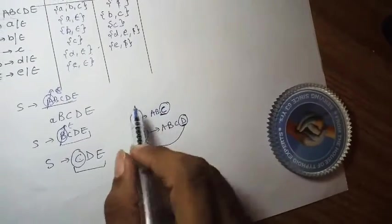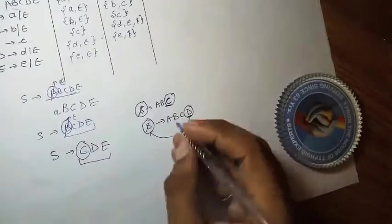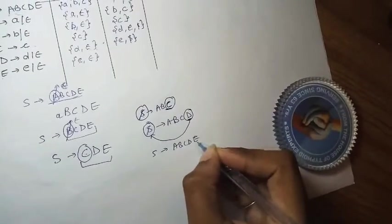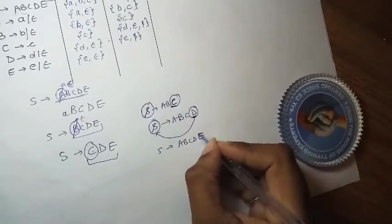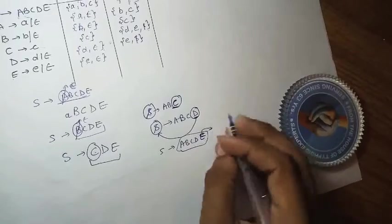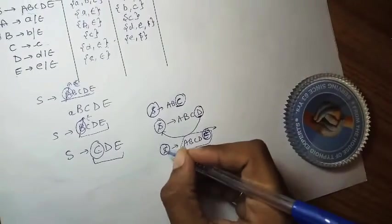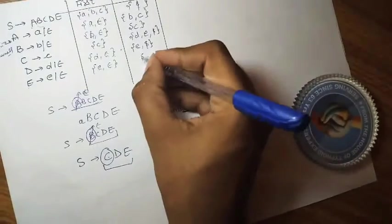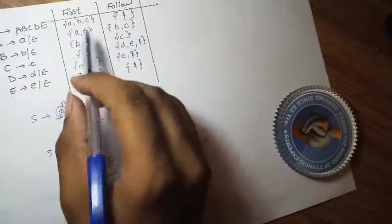For FOLLOW(E), E is at the end of the string A B C D E in the production for S. Since E is already at the terminal position, by the same rule, FOLLOW(E) inherits FOLLOW(S) = {$}. Therefore FOLLOW(E) = {$}. That completes all FOLLOW computations.